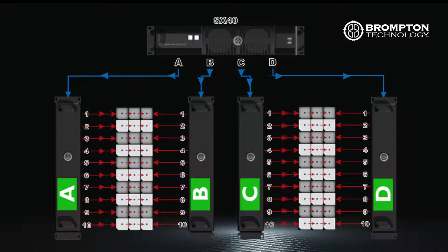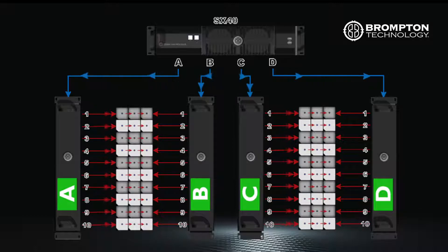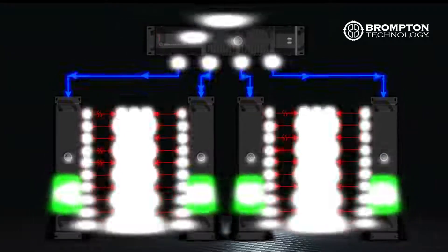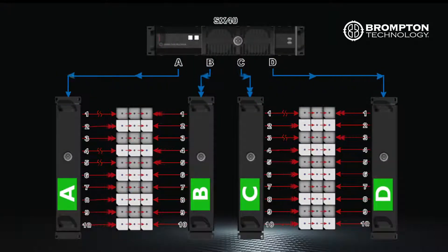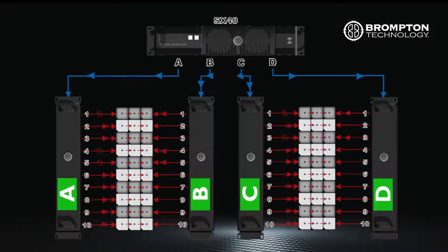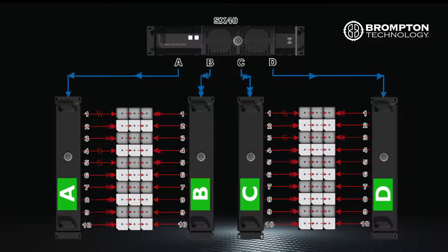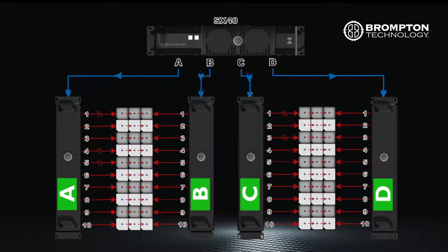This creates a closed loop where the processors can get a signal to every panel in your string using the two ports. So if there was an interruption in the signal getting to the panel, for example a cable being knocked out, the processor detects this and the signal is then sent in the other direction using the second port in the loop.